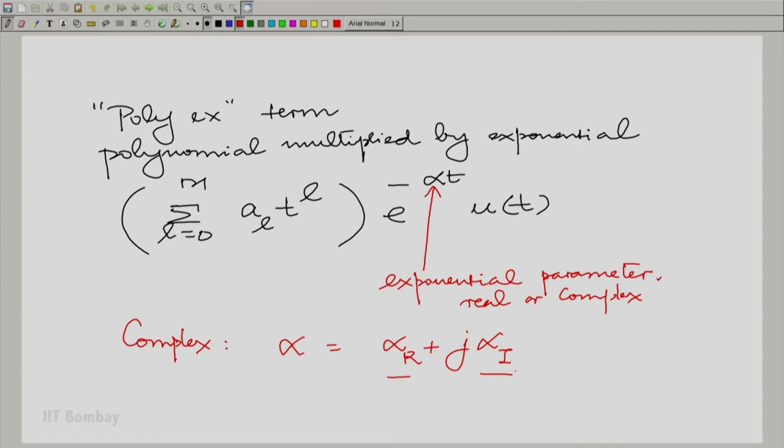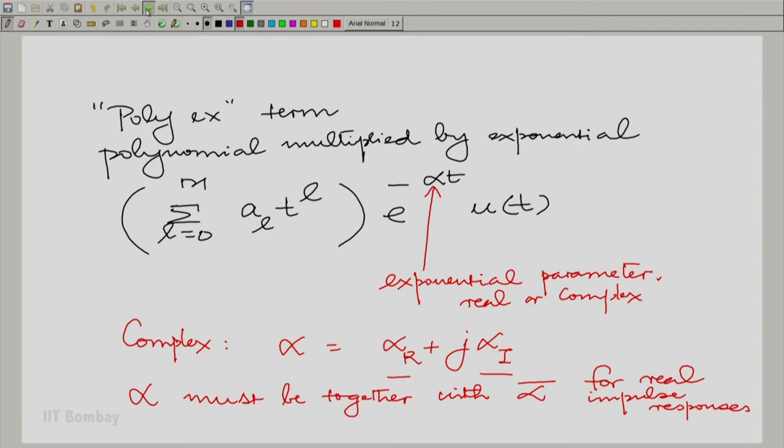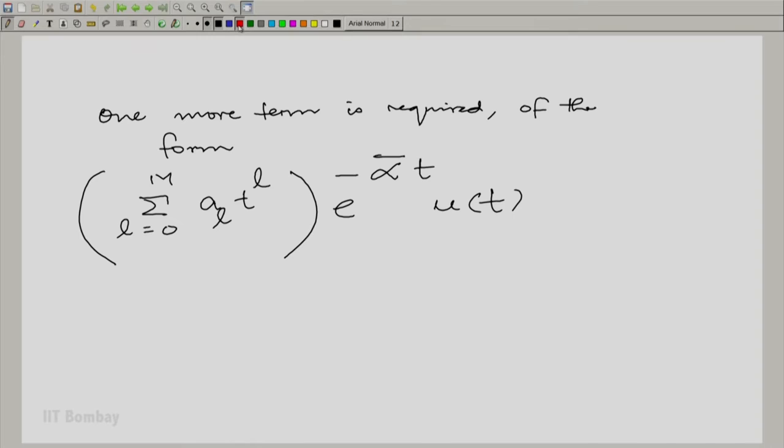If the overall impulse response is real, this is just one of the terms, remember. If the overall impulse response is real, then alpha must come together with alpha complex conjugate. In other words, if you have one term of this form, you must have another term with the complex conjugate exponential parameter.